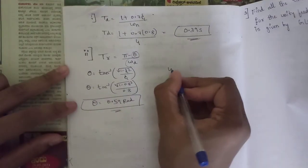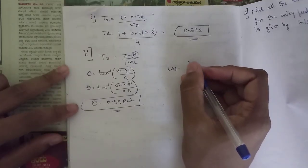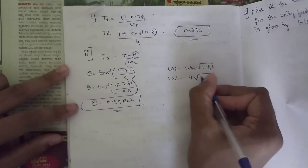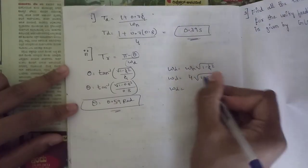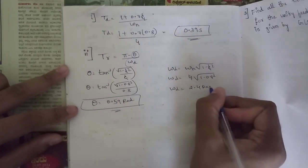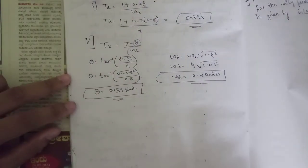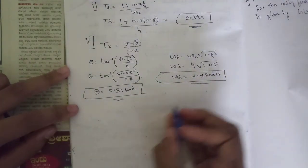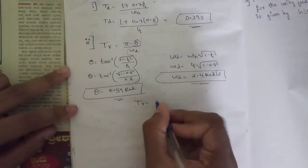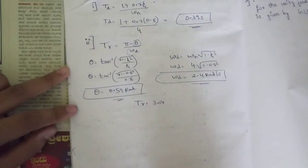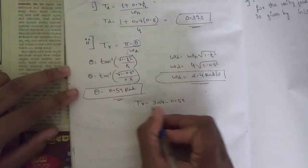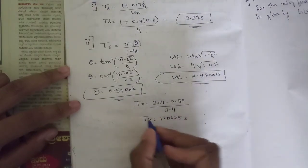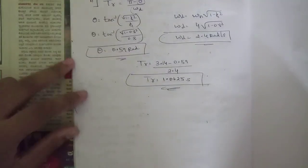Next, ωd = ωn × √(1 − ζ²) = 4 × √(1 − 0.8²) = 2.4 radians per second. Now substituting into the rise time formula: tr = (π − θ) / ωd = (3.14 − 0.59) / 2.4 = 1.0625 seconds.